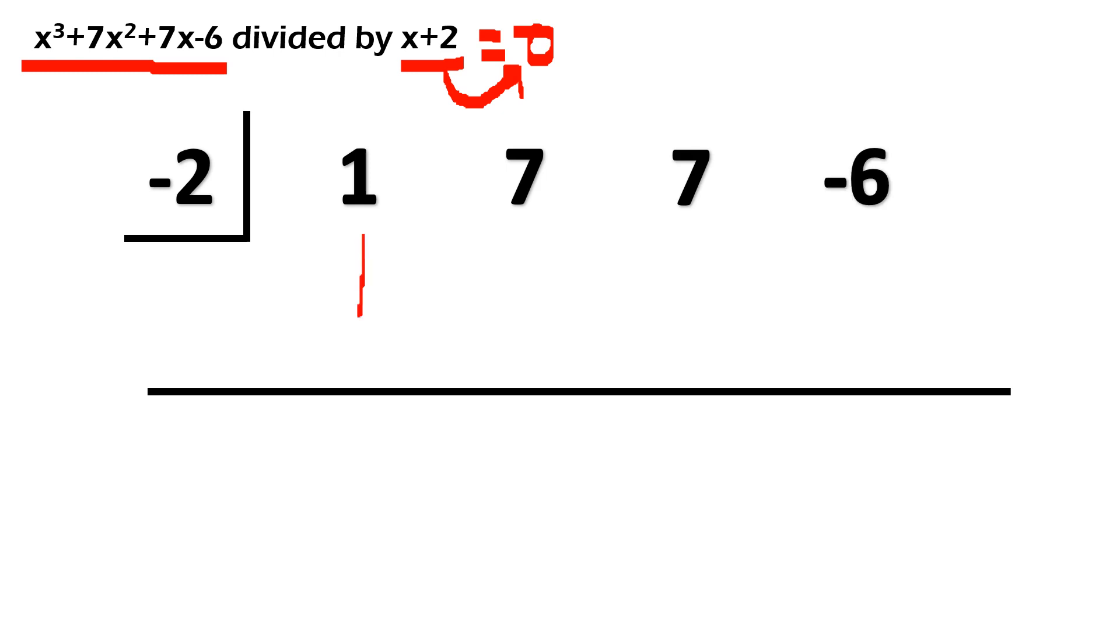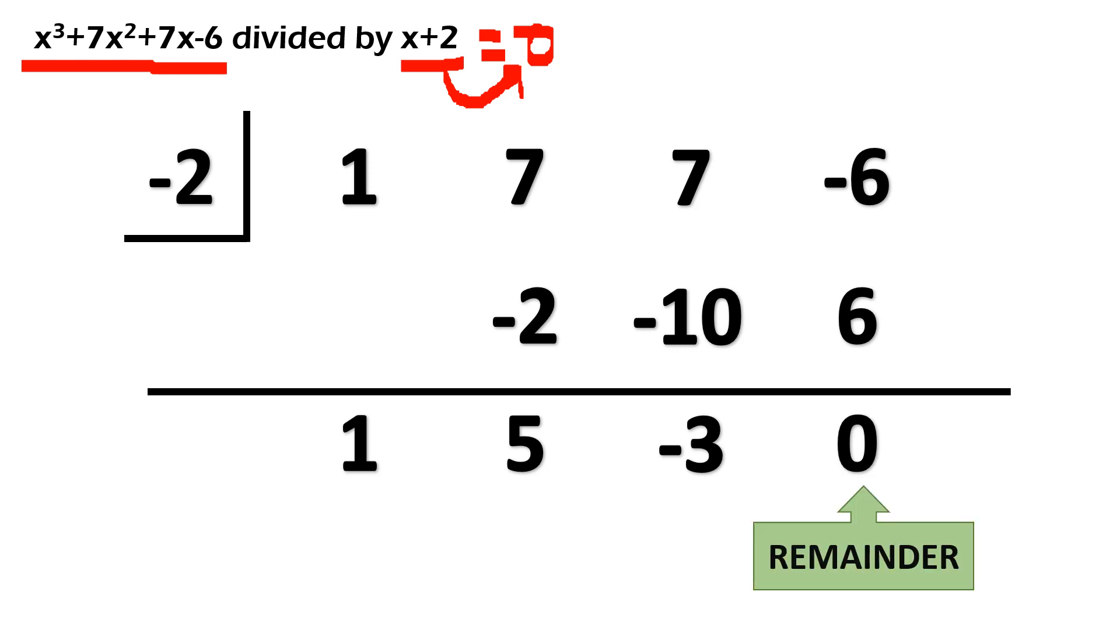Sunod na step is to bring down 1, your leading coefficient. Okay, next step is to multiply. Negative 2 times 1, negative 2. Then, subtract natin ito. 7 minus 2 will give us 5. Multiply ulit. Negative 2 times 5 is negative 10. Subtract natin ulit. Magkaiba ng sign. So, copy the sign of the bigger number, negative 3. And then, multiply ulit. Negative 2 times negative 3 is positive 6. Then, subtract ulit. Negative 6 plus 6 is equal to 0.